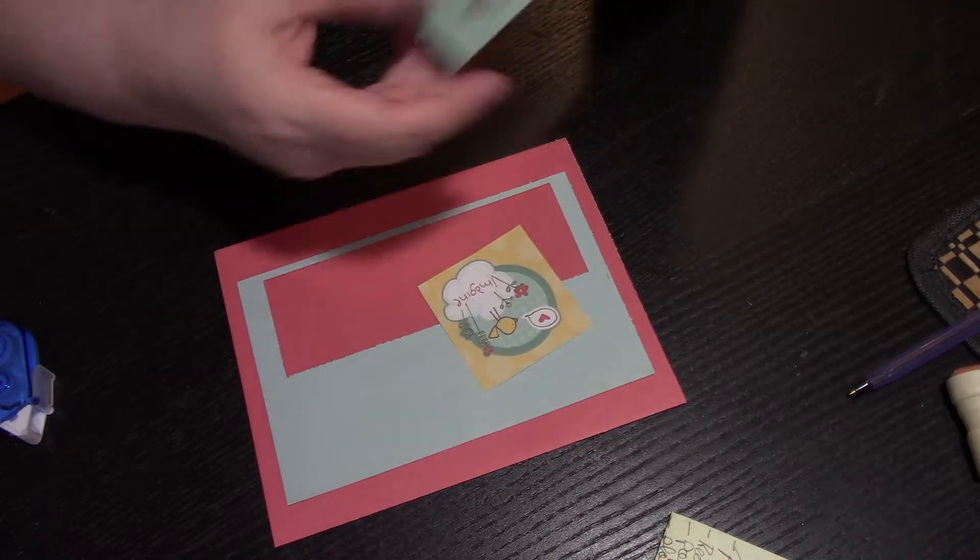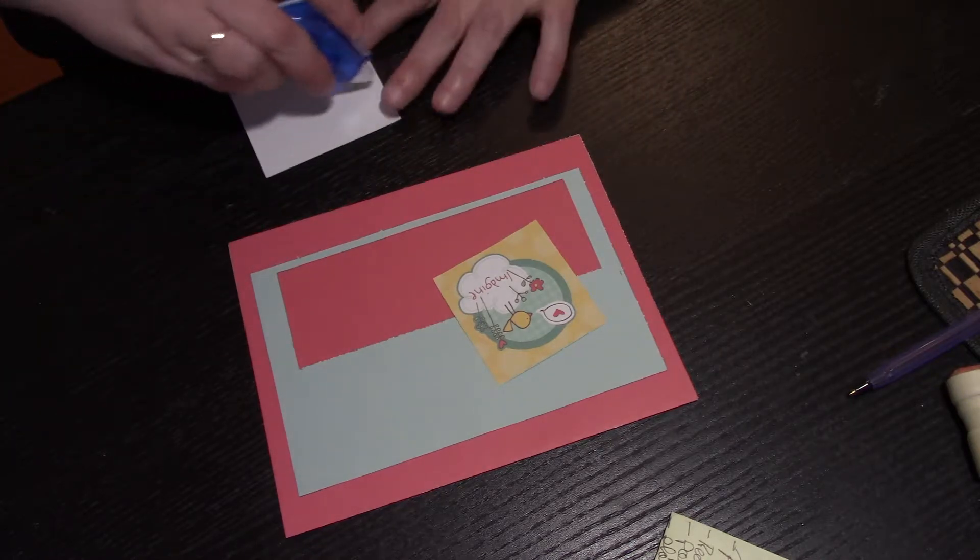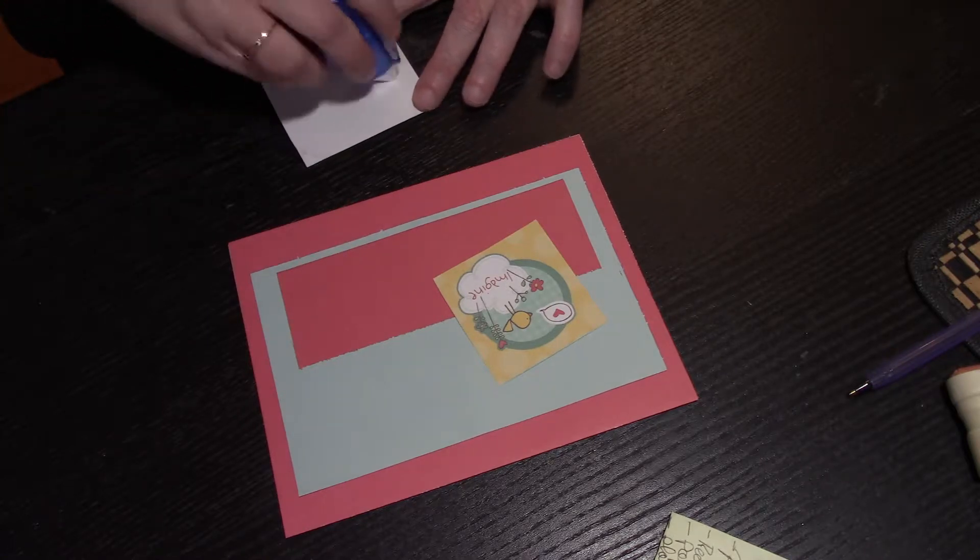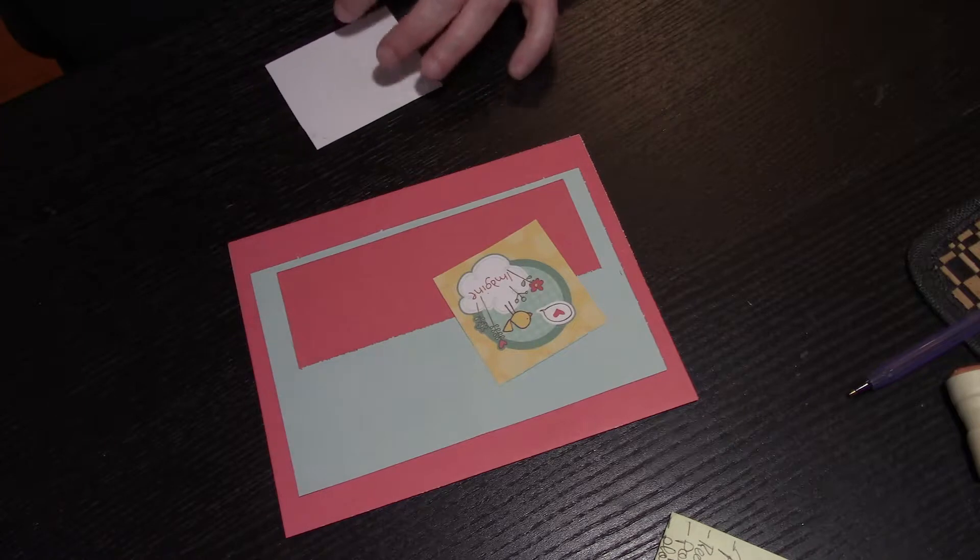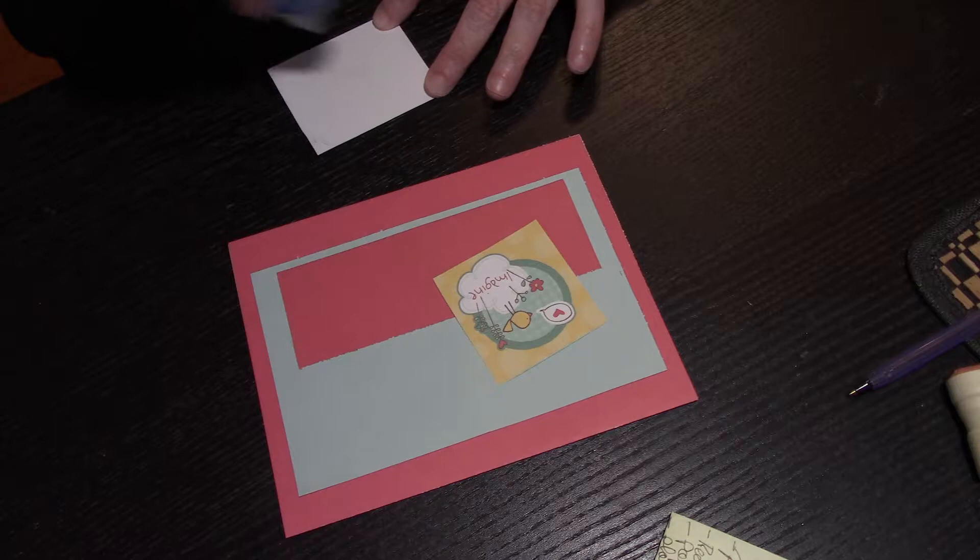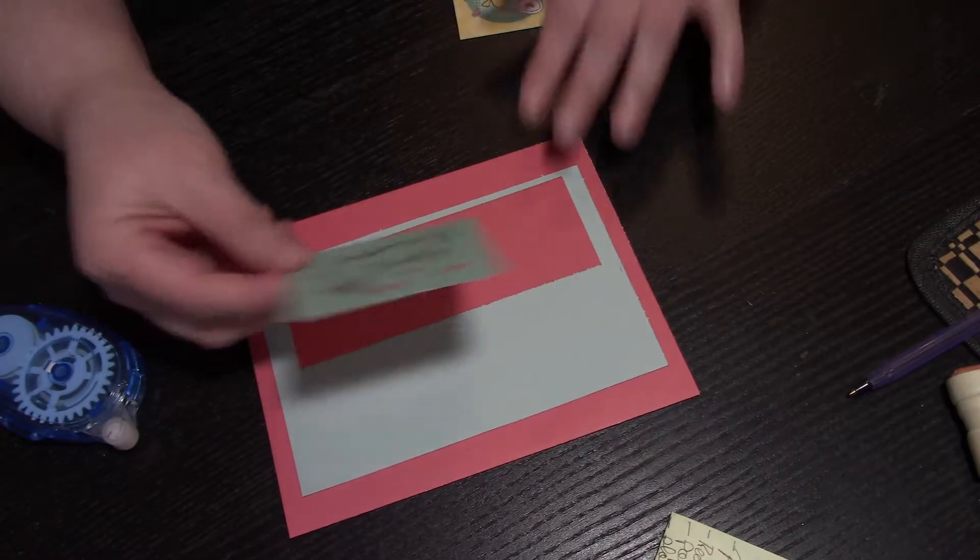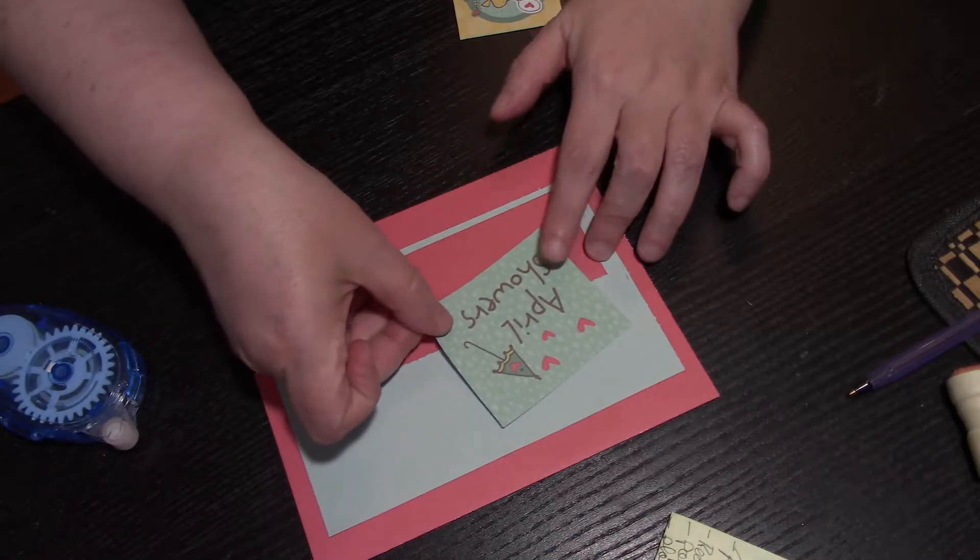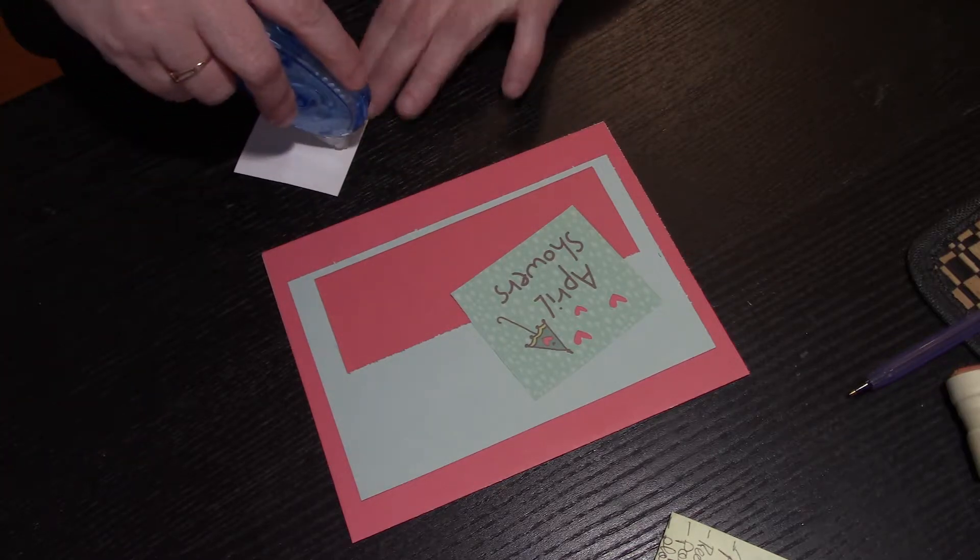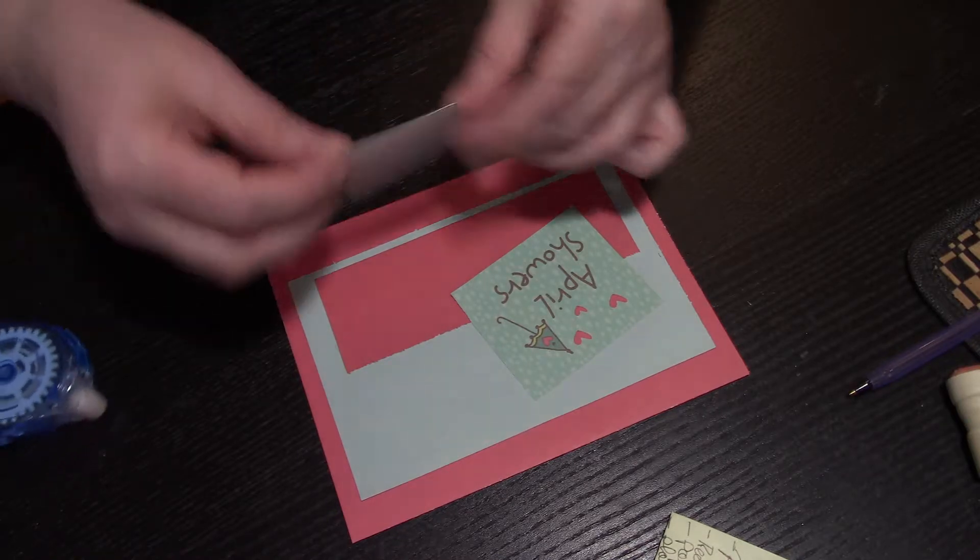I've got these two cardstock pieces that I cut out and I'm putting these down. Okay, I'm losing control of my tape. There we go. I think I'm going to put the April Showers right here and then the cute little birdie, I'm just going to put this right here like so.